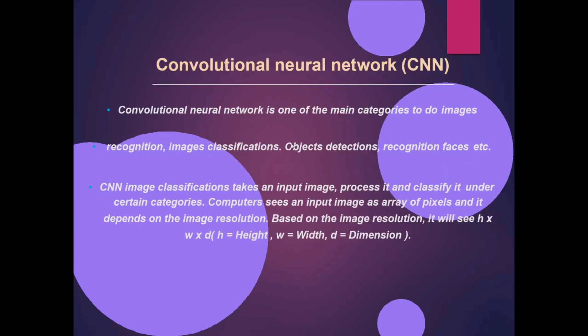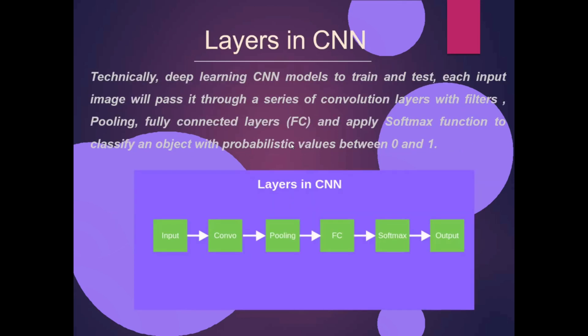Here is the Convolutional Neural Network (CNN). CNN is one of the main categories used for image recognition, image classification, object detection, object recognition, and more. The layers in CNN are: input layer, convolutional layer, pooling layer, fully connected (FC) layer, softmax layer, and output layer.